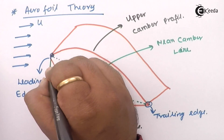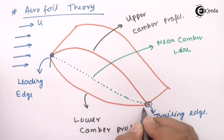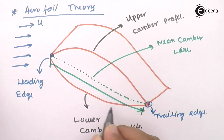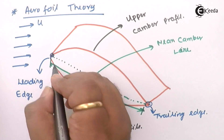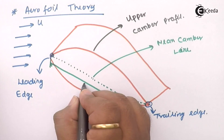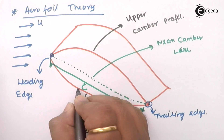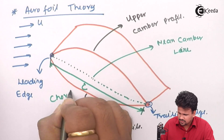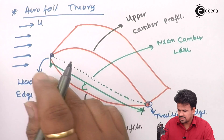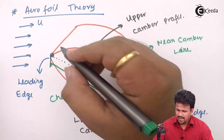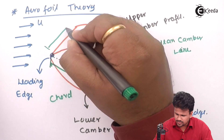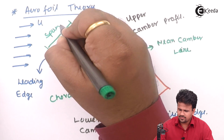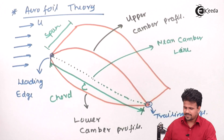The bottom part is called the lower camber profile, or it can also be called the profile line. This entire length of the aerofoil parallel to the direction of the flow is called C, or it is called the chord of the aerofoil. And this distance is called the span of the aerofoil.